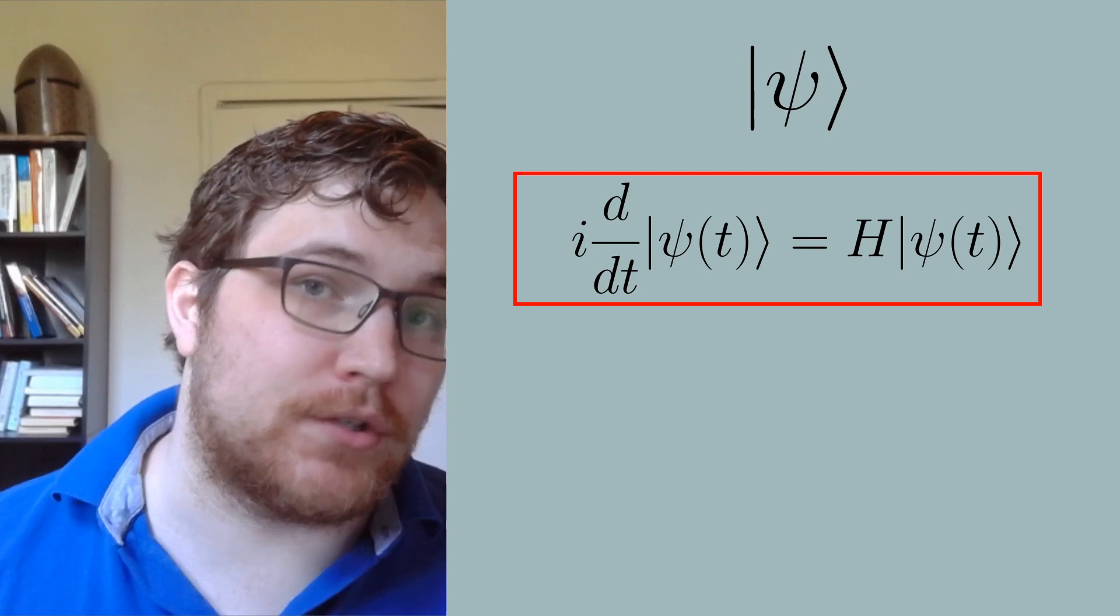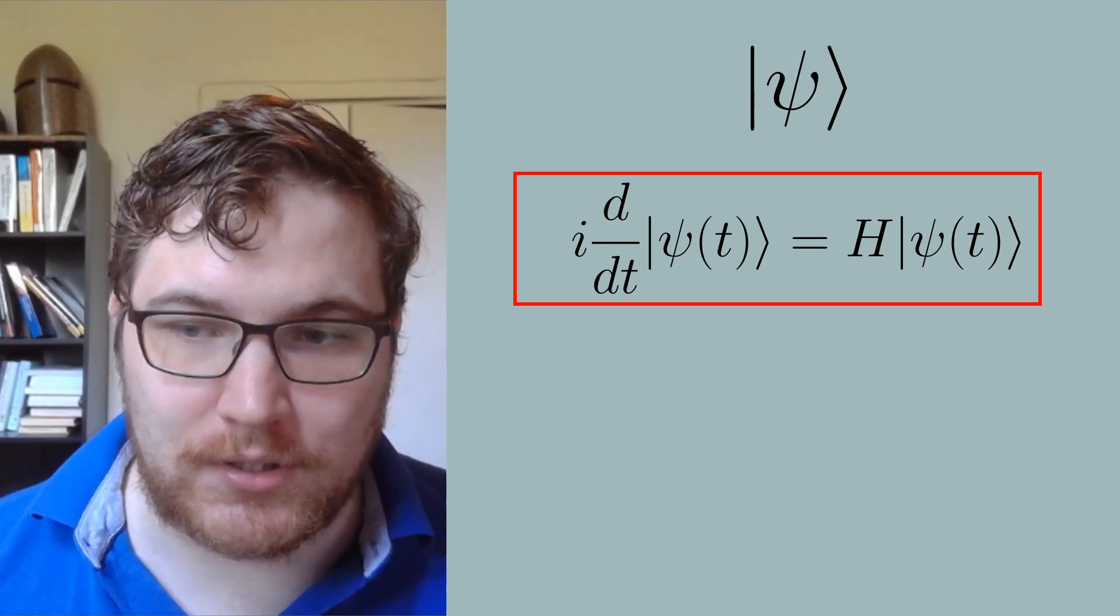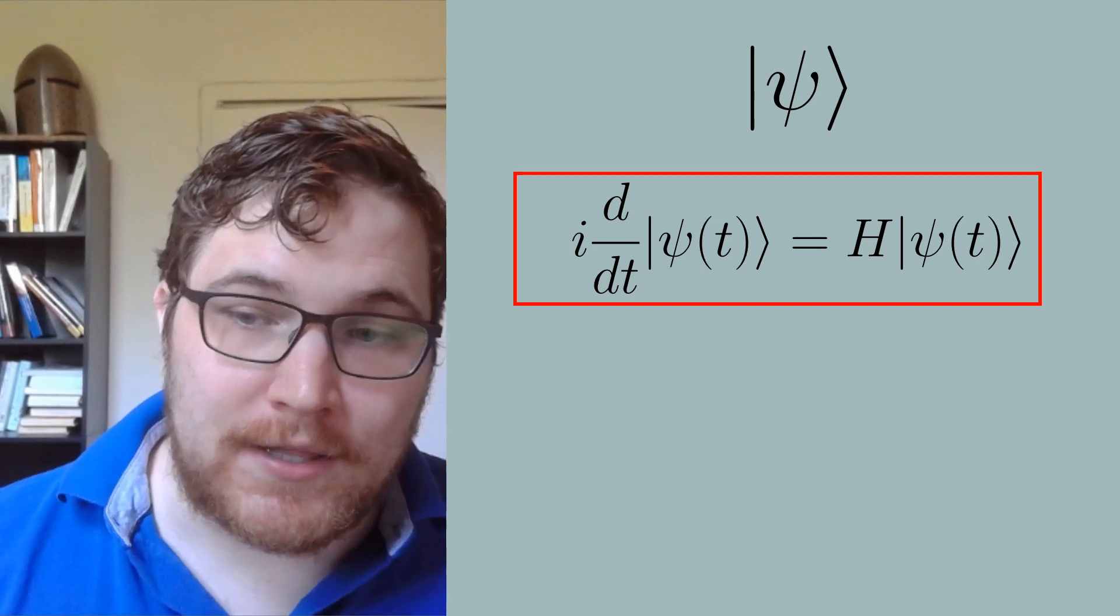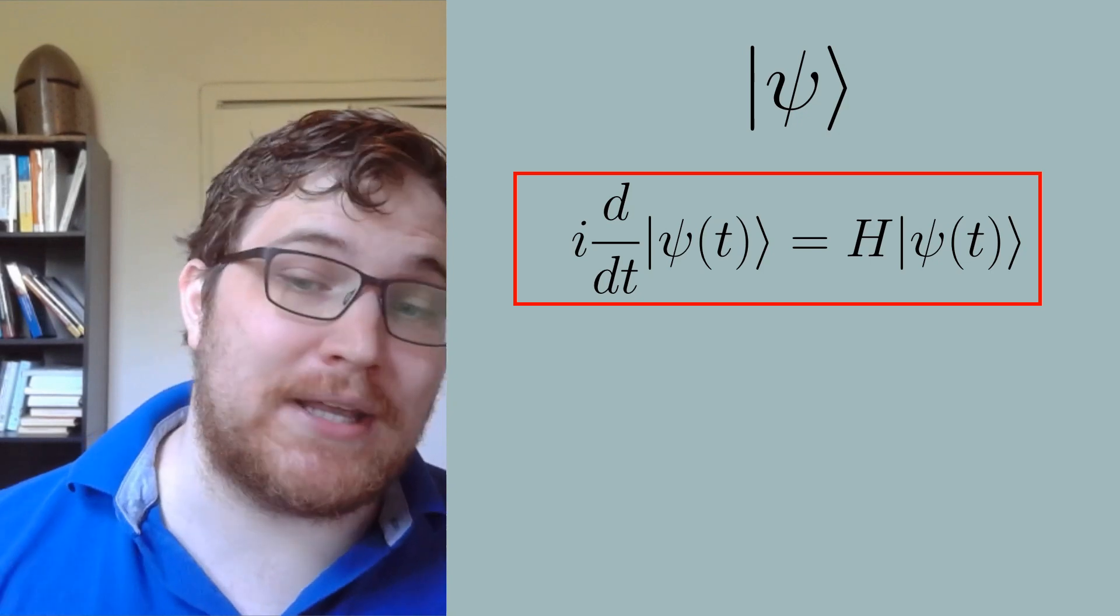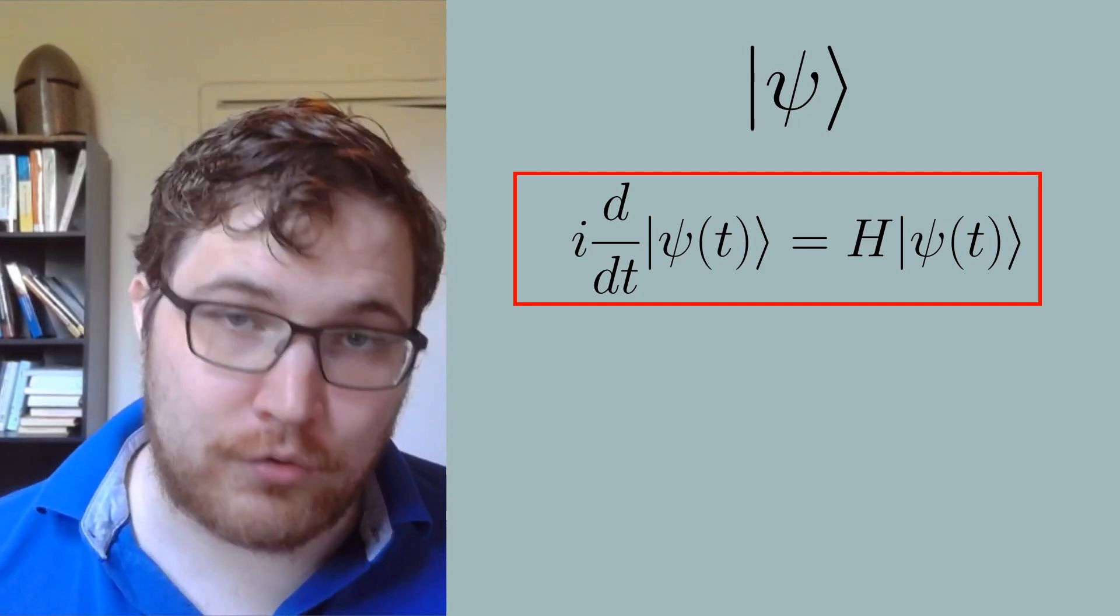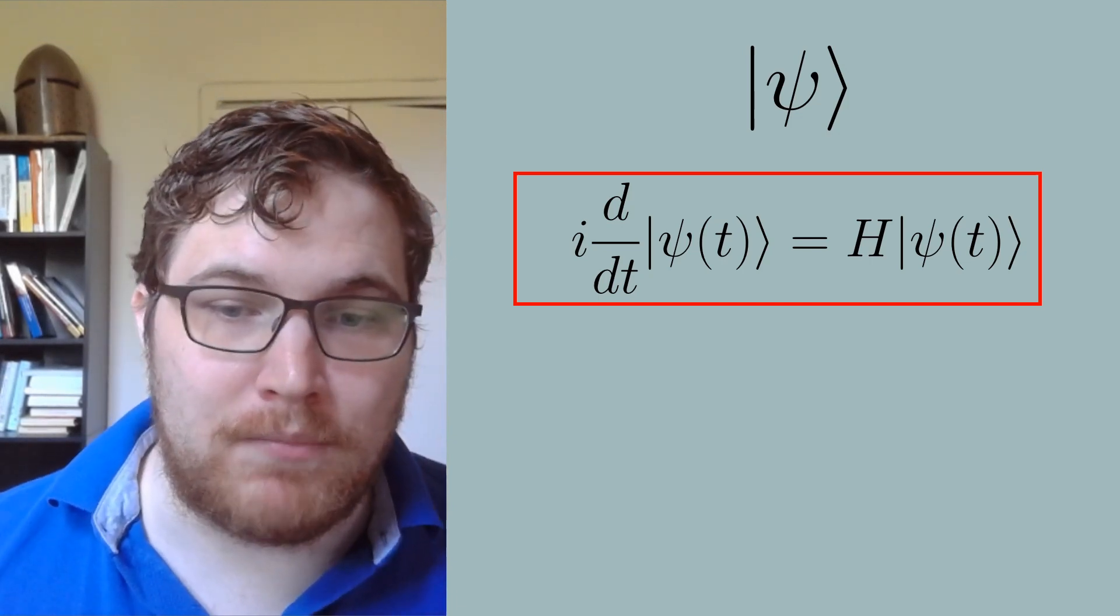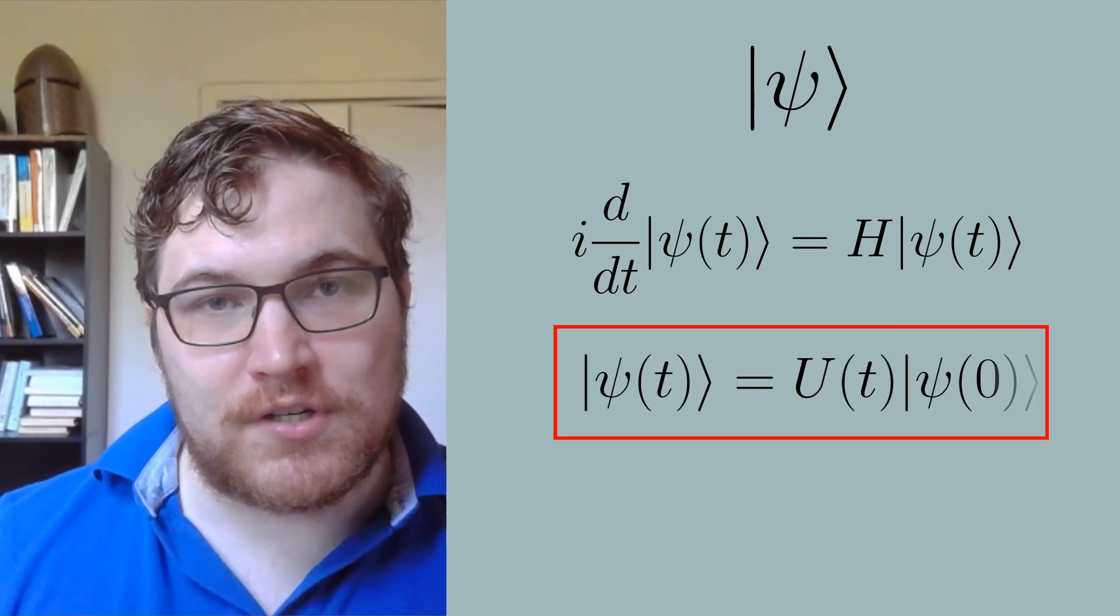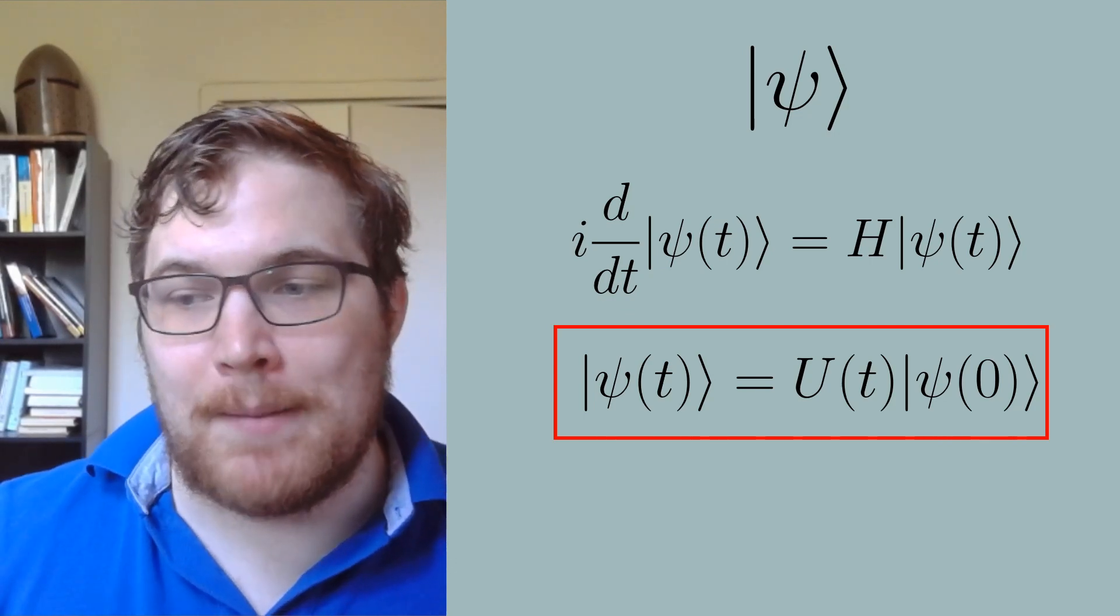This gives us unitary time evolution, an evolution that conserves probability. We have as usual here set Planck's constant to one and we will continue to do so throughout the remainder of the video. Unitary time evolution means that I can write future states by knowing an initial state and multiplying a matrix U into it.